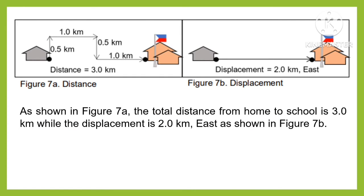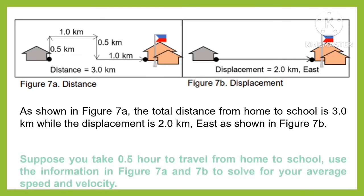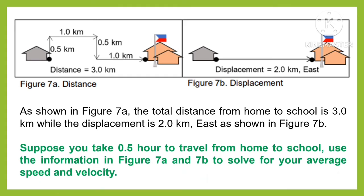As shown in figure 7a, the total distance from home to school is 3 kilometers, while the displacement is 2 kilometers east, as shown in figure 7b. Suppose you take 0.5 hour to travel from home to school. Use the information in figures 7a and 7b to solve for the average speed and velocity.